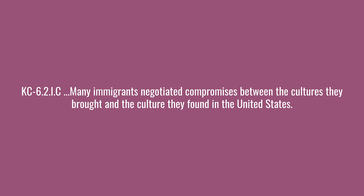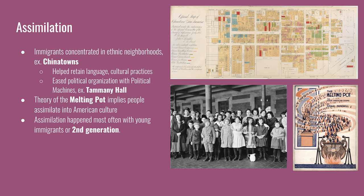Many immigrants negotiated compromises between the cultures they brought and the culture they found in the United States. Immigrants concentrated in ethnic neighborhoods. An example is Chinatowns, present throughout the United States, established in the 19th century as a result of Chinese workers living in the same neighborhood — sometimes due to discriminatory housing laws — helping retain language, cultural practices, and community support. For ethnic neighborhoods in the Northeast, especially in New York City, they facilitated political organization through political machines.